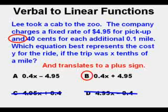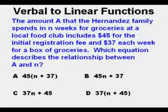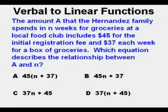Here's our next problem. The amount A that the Hernandez family spends in N weeks for groceries at a local food club includes $45 for the initial registration fee and $37 each week for a box of groceries. Which equation describes the relationship between A and N?